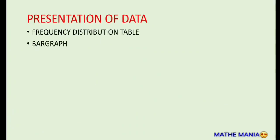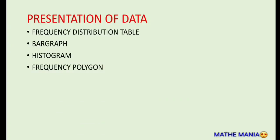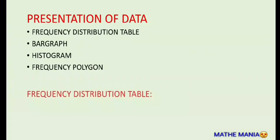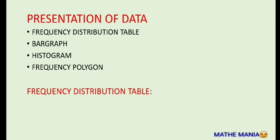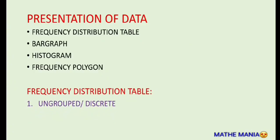Now that the data has been collected, next comes how to present it effectively and meaningfully. There are many ways of presenting data — frequency distribution table, bar graph, histogram, frequency polygon. Today we are going to take up the first one, that is the frequency distribution table. Frequency distribution tables are of two types: ungrouped or discrete, and grouped or continuous.